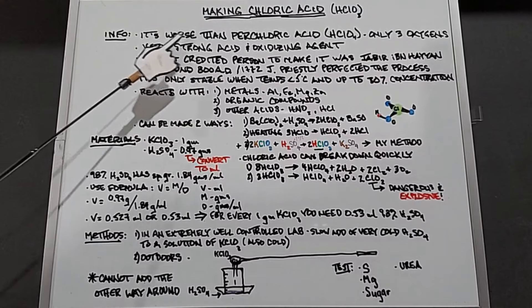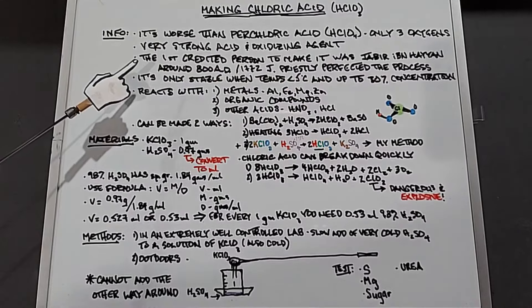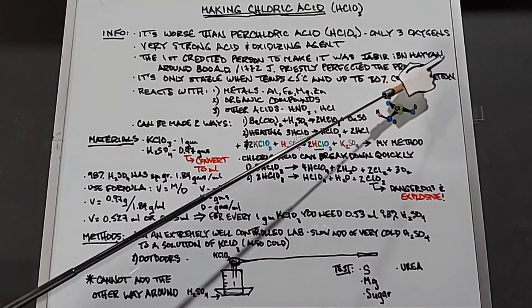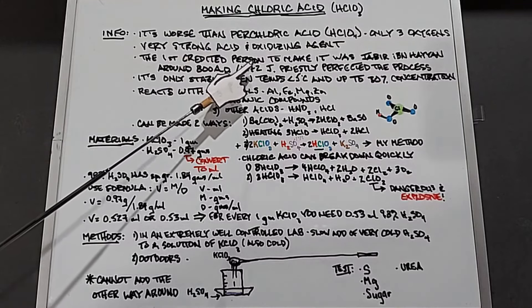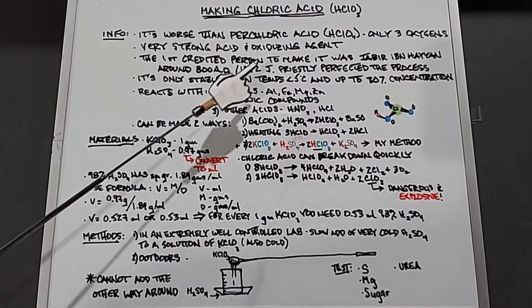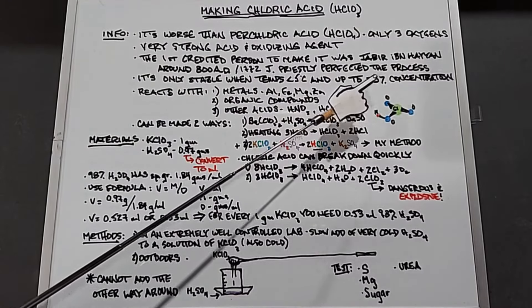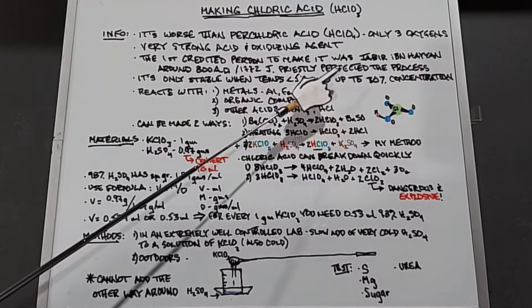Because of the three oxygens, chloric acid is a very strong acid and oxidizing agent. The first person ever credited to make chloric acid was Jabir ibn Hayan around 800 A.D., but it wasn't until 1772 that Joseph Priestley perfected the process. Chloric acid is only stable when temperatures are below five degrees Celsius and up to a 30% concentration.